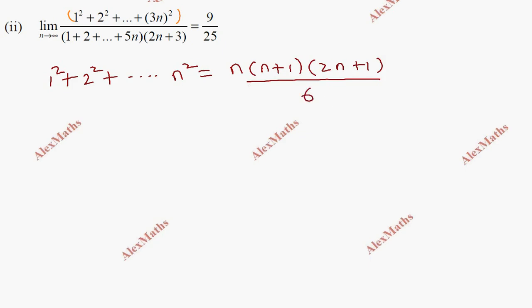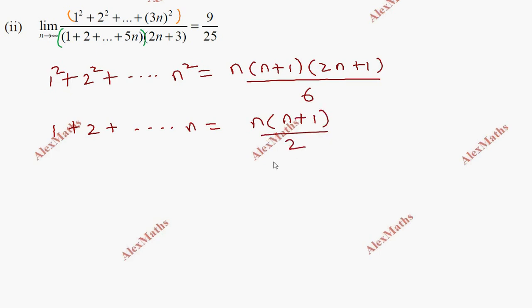The denominator is the 1 + 2 + 3 + ... series. The formula for this is: 1 + 2 + 3 + ... + n = n(n+1) / 2.